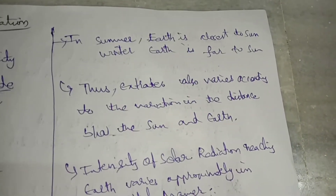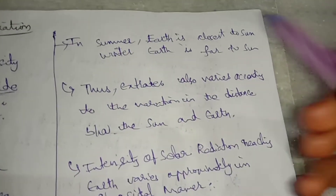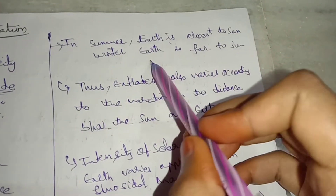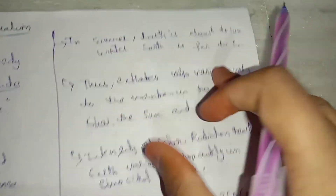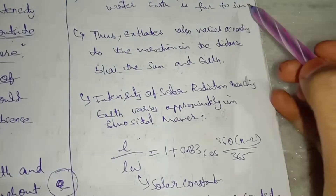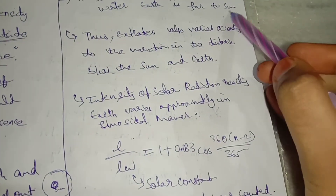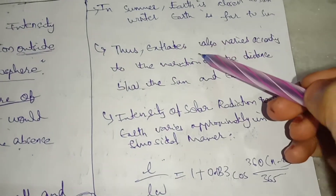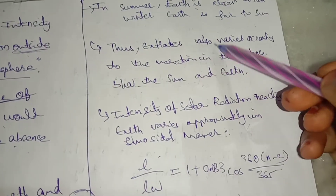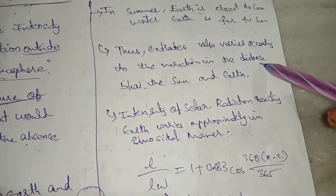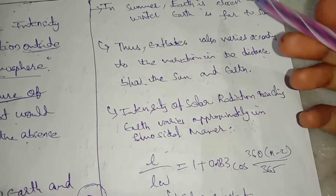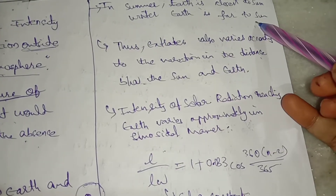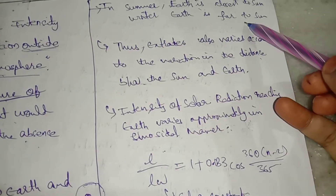In summer, earth is closer to the sun. In winter, earth is farther from the sun. That's why extraterrestrial solar radiation also varies according to the variation in the distance between earth and sun.